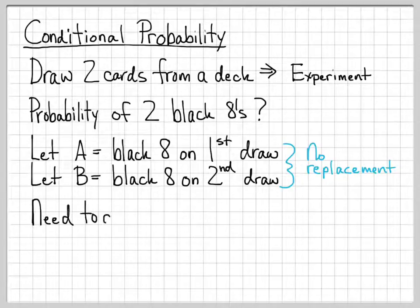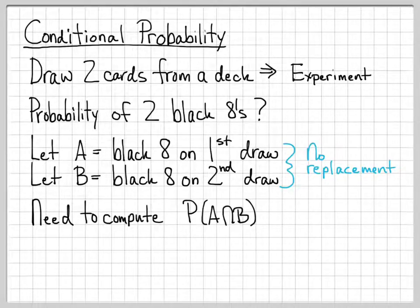So what do we want to compute? We want to compute the probability of A and B. What's the probability of drawing a black eight on the first draw and drawing a black eight on the second draw? Because that is the probability we're being asked to compute here.